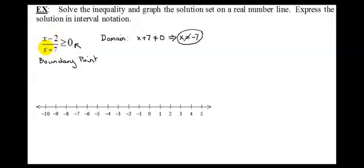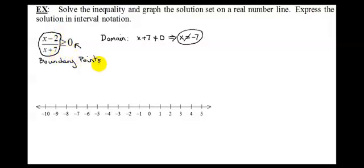Luckily, this problem is set up in the perfect form. I have 0 on one side, and on the other side I have everything over a common denominator of x plus 7. So we're ready now to find our boundary points.